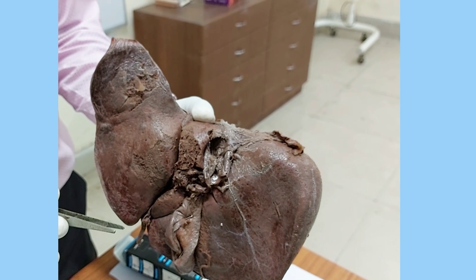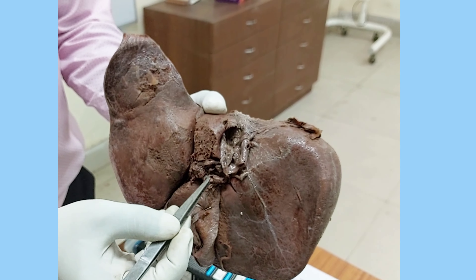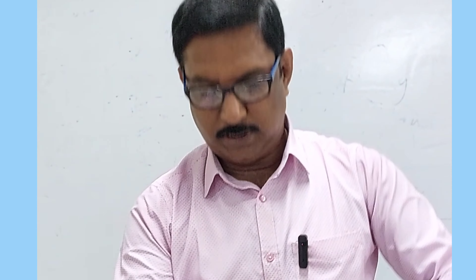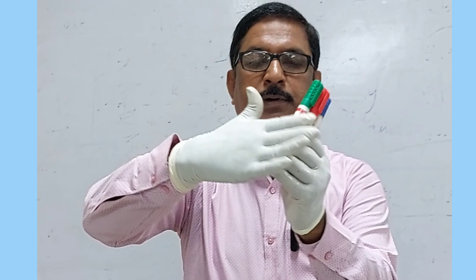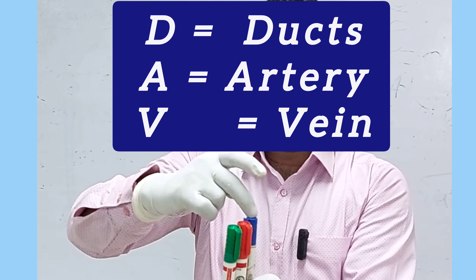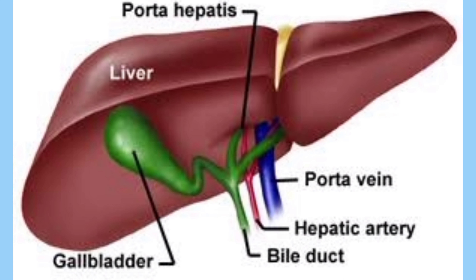Of these five structures, you must especially mention the portal vein, hepatic artery, and hepatic duct. The relationship of these three structures from anterior to posterior is remembered as DAV: Duct (hepatic duct) anteriorly, then hepatic Artery, and then portal Vein posteriorly. The portal vein and hepatic artery enter into the liver parenchyma through the Porta Hepatis, while the hepatic duct comes out of the liver parenchyma as the common hepatic duct.